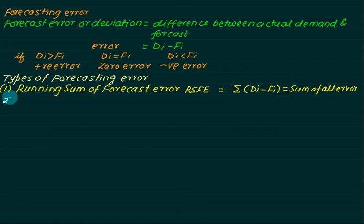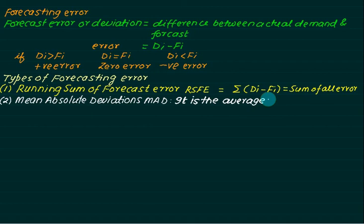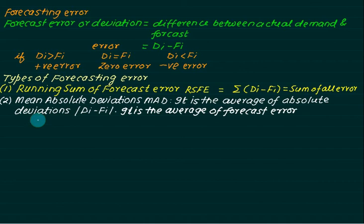The second type of error which we normally count is mean absolute deviation. Absolute deviation is the same as absolute error, and to find the mean we add all the deviations divided by the number of sample data. In short it is written as MAD and can be written as mod of Di minus Fi.